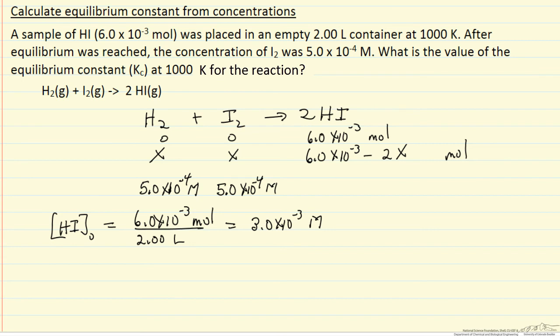Our concentration at equilibrium is 3.0 × 10⁻³ minus 5.0 × 10⁻⁴ times 2. Every mole we make per liter of iodine, we react 2 moles of hydrogen iodide. And so now we have all the concentrations.